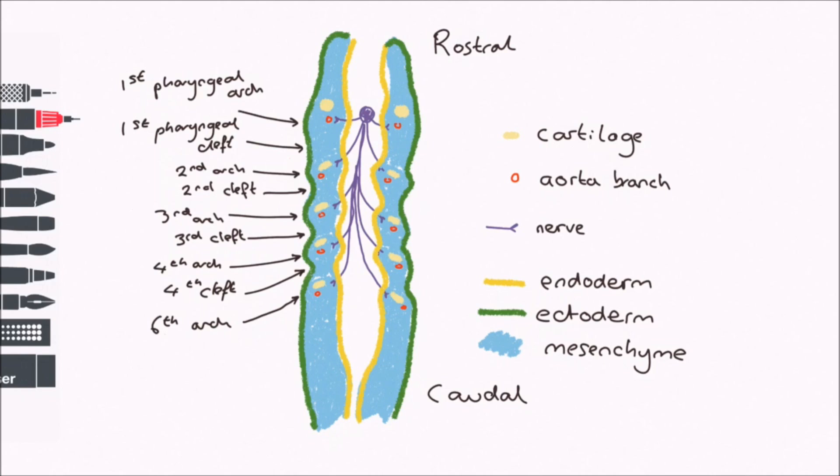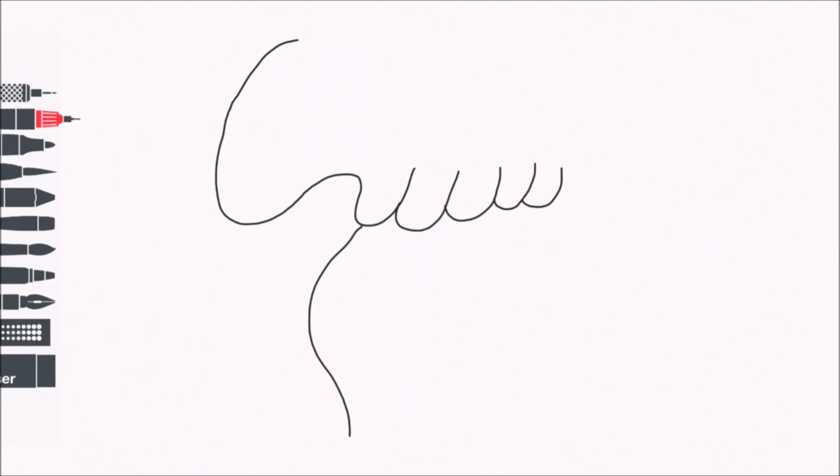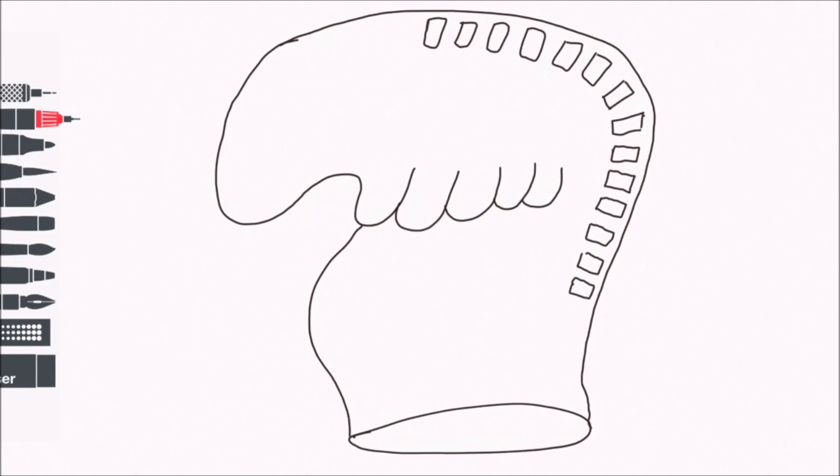The pharyngeal arches first appear at the end of the fourth week, and develop through into the fifth week. Let's take a look at the cranial nerves associated with the pharyngeal arches. Let's go to a sagittal section to see this in more detail.